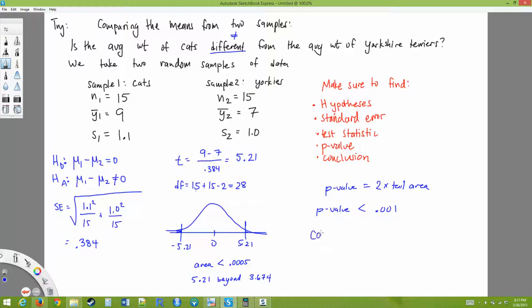So my conclusion is reject the null hypothesis, okay? We have evidence that the population mean weights are different. And specifically, we have evidence that the average weight of cats is greater than the average weight of Yorkshire Terriers.